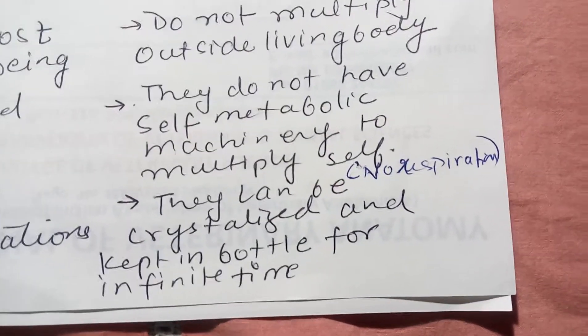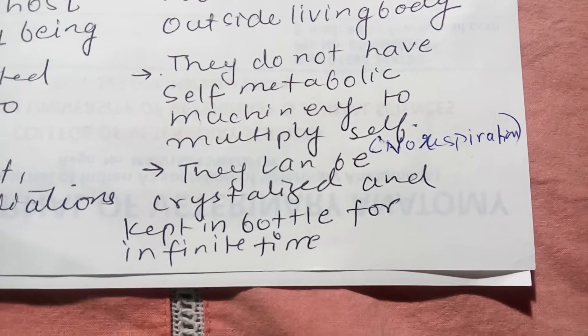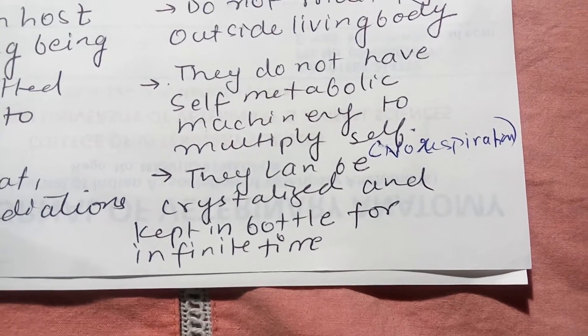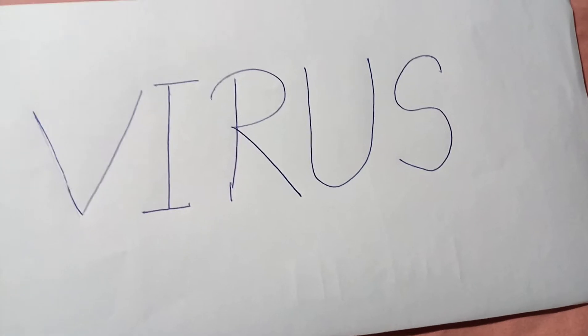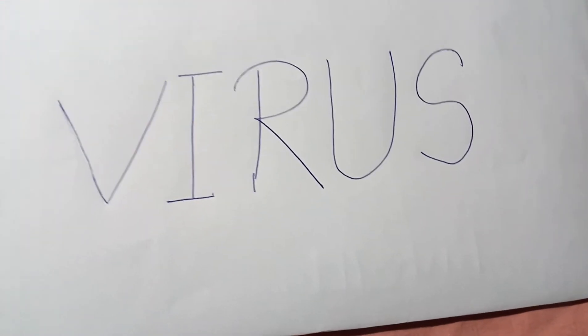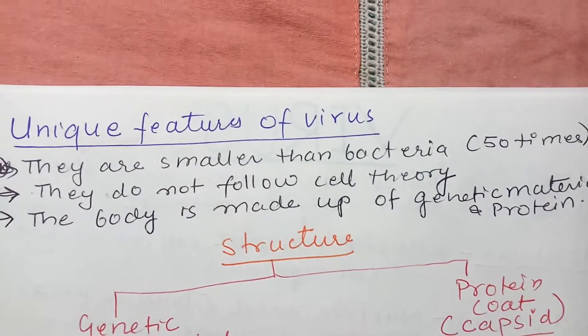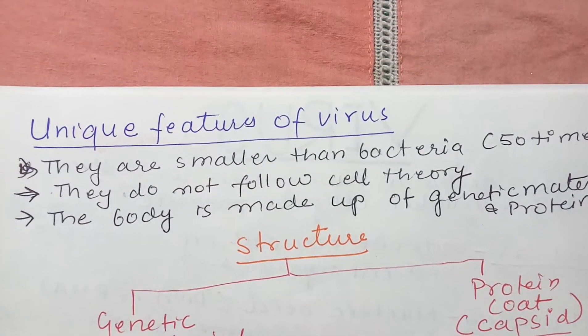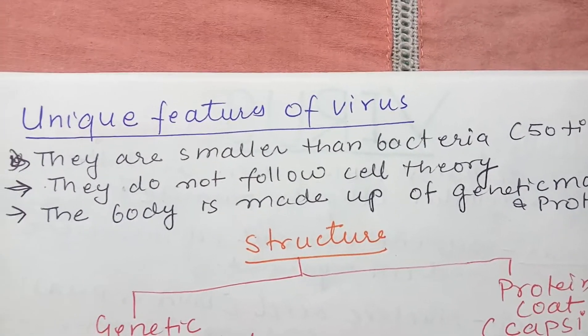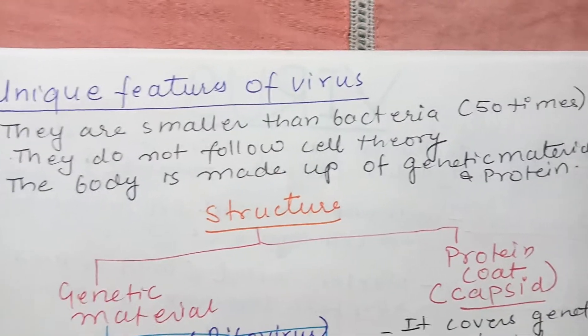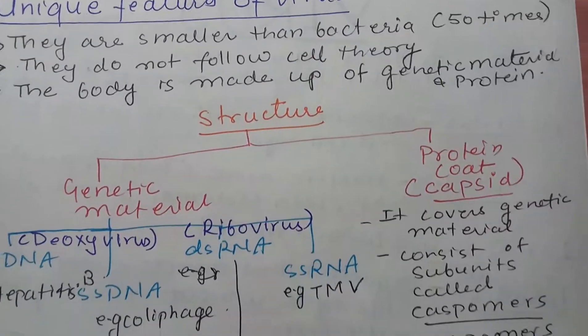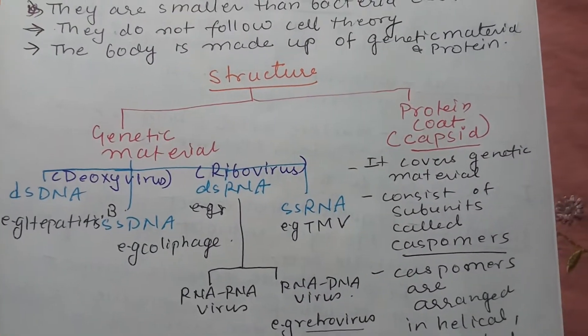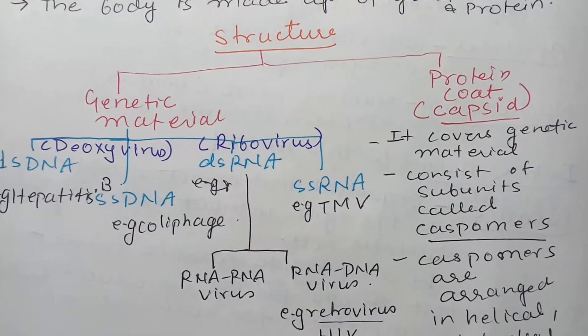They can be crystallized and kept in a bottle for an infinite time. If undisturbed without any host surrounding, you can keep them indefinitely, and you can revive them again in the presence of a suitable host. Now looking at the unique features of virus: they are about 50 times smaller than bacteria, they do not follow cell theory, and the body is made up of genetic material and protein.